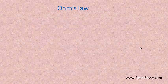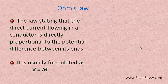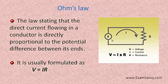Ohm's law states that when the current is flowing in a conductor, it will be directly proportional to the voltage difference between its ends — that is, current is directly proportional to the differential potential. This definition works at a constant, steady temperature. It is represented by the formula V = IR: voltage is directly proportional to current and resistance. The diagram indicates that voltage is directly proportional to current and resistance.